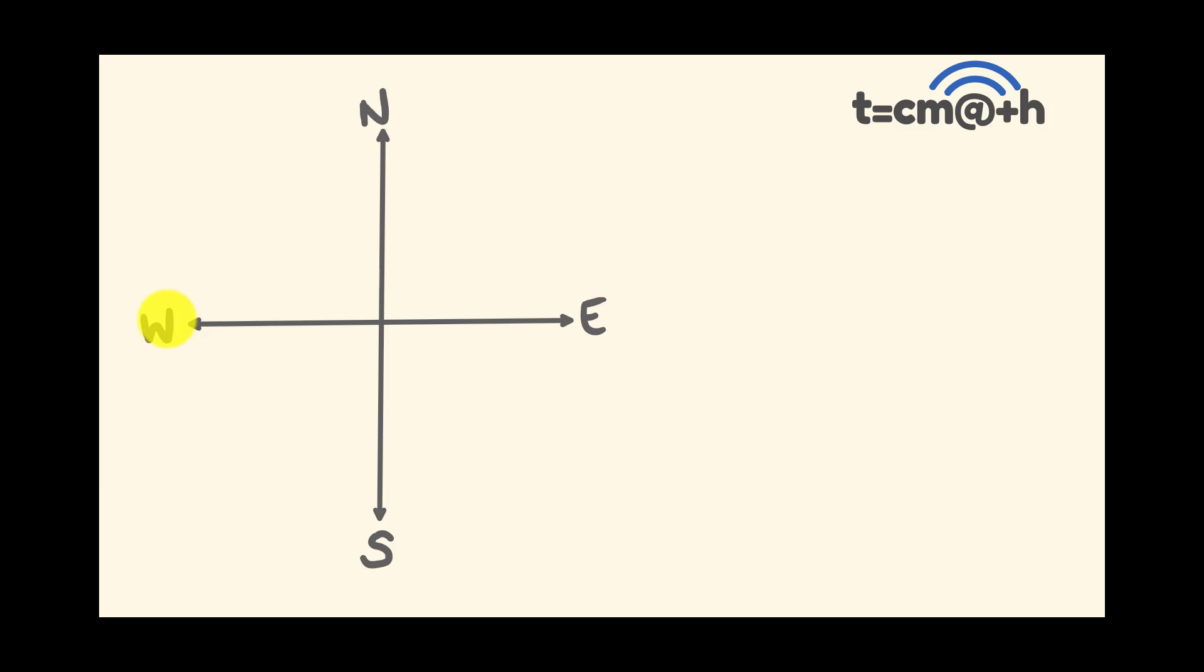The two ways we're going to look at: true bearings, which is pretty much counting from north in a clockwise direction around so we get to the point we're facing, and conventional bearings, which is a little bit of a tweak. We start with north or south and then see how many degrees we need to move either to the east or the west. We'll have a look at these by doing a few examples.